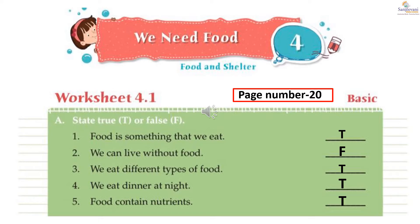You have to write capital letter T for true and capital letter F for false. The first statement is: food is something that we eat. You have to write letter T — true. The second one is: we can live without food. Students can't live without food, so you have to write letter F — false.